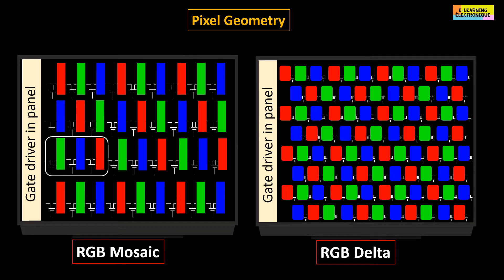In the RGB delta screens, there is an offset between the pixels of a line and the one that follows it.